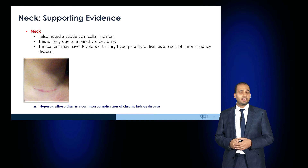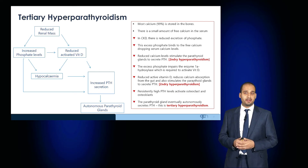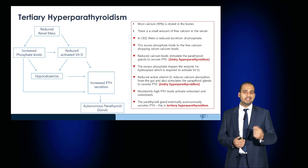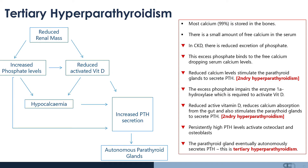In the neck, look carefully for a collar incision. This may be as a consequence of tertiary hyperparathyroidism which resulted from previous chronic kidney disease. In chronic kidney disease, there's a reduced excretion of phosphate. That excess phosphate binds to the free calcium, dropping serum calcium levels. These reduced serum calcium levels stimulate the parathyroid glands to secrete PTH — this is physiological secondary hyperparathyroidism.